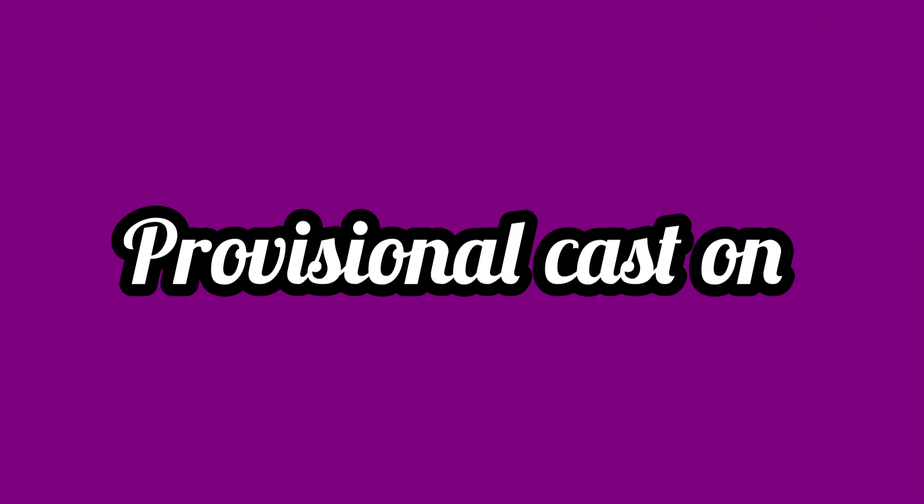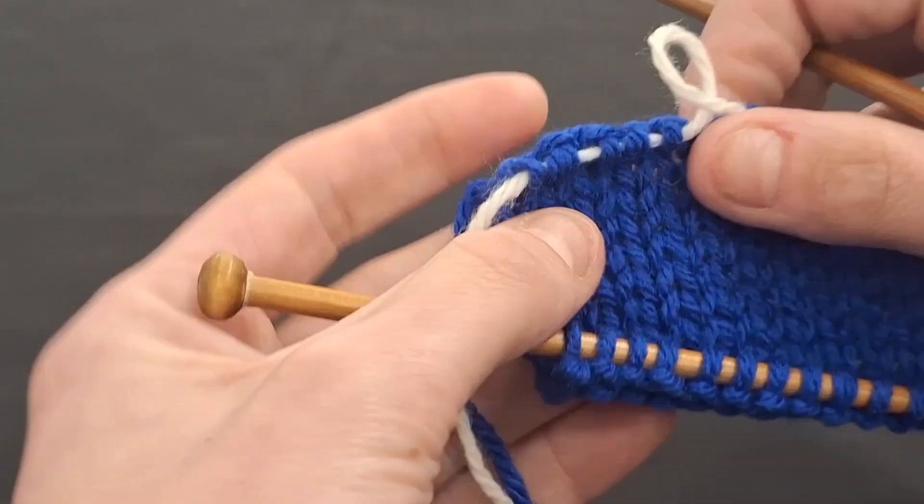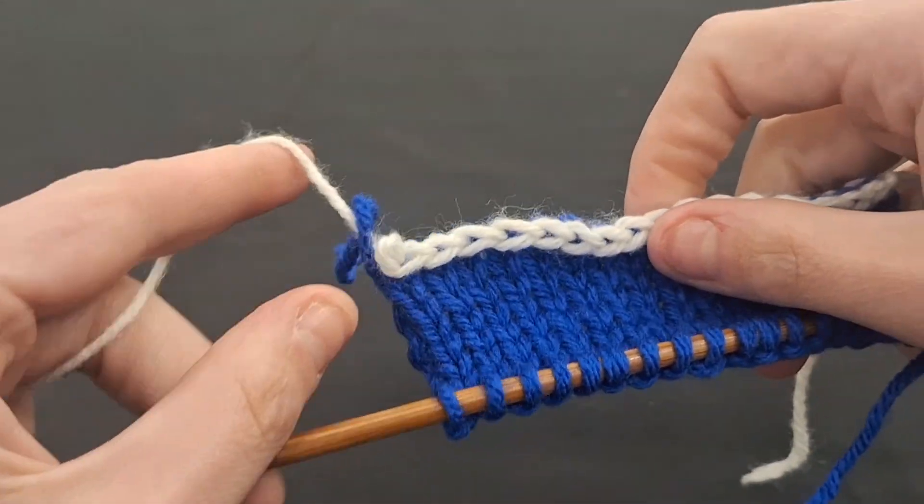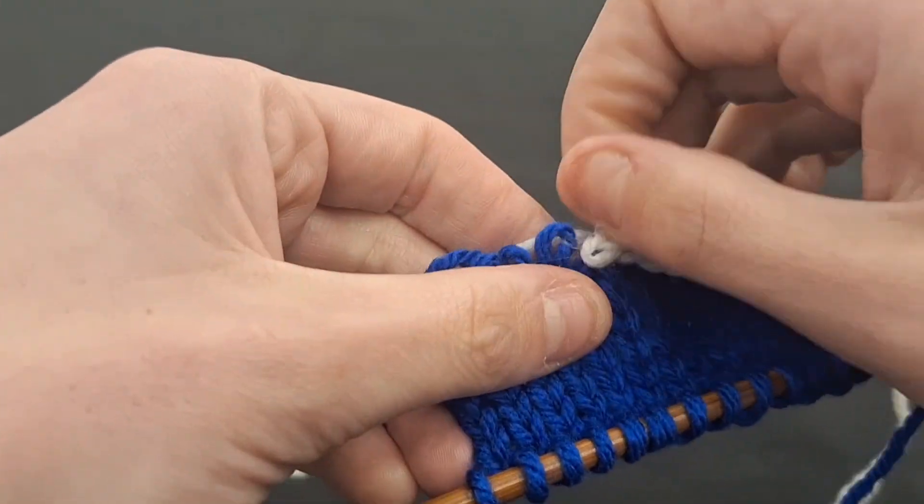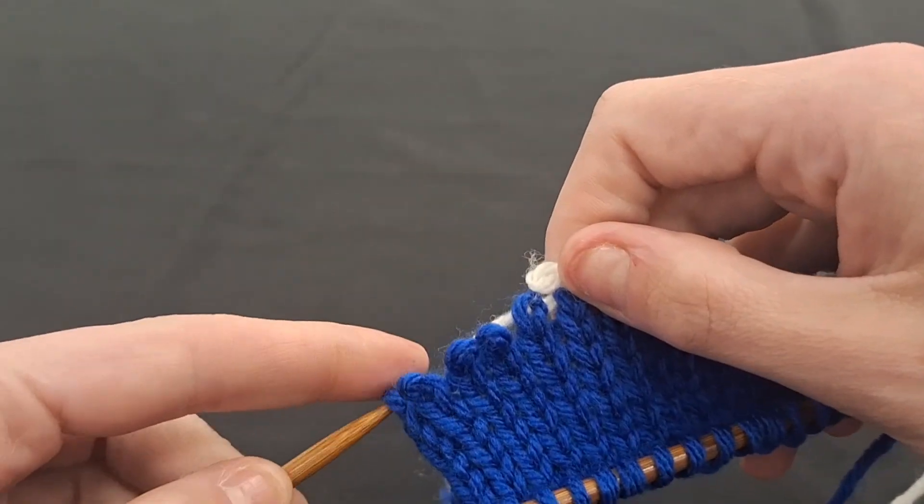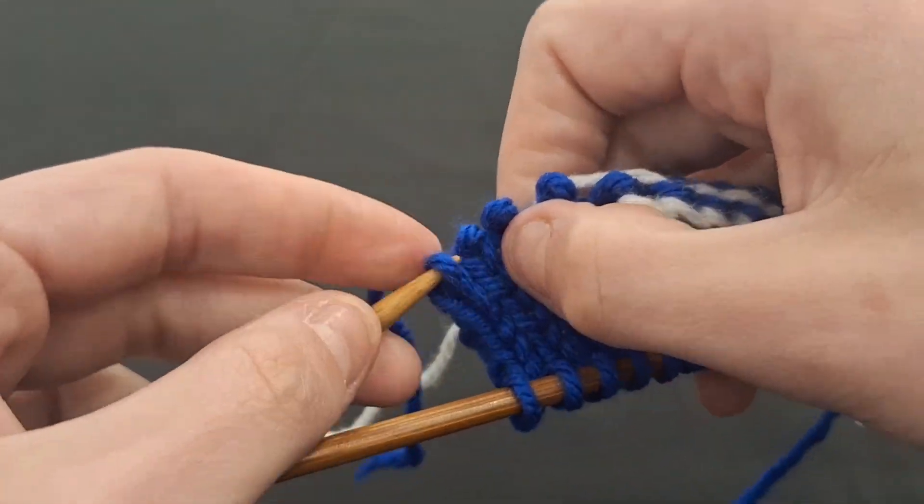Provisional Cast On. A provisional cast on is one that is temporary. It is worked in such a way that the cast on stitches can then be removed and in turn become live stitches at the other end of your knitted fabric.